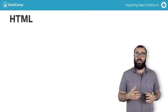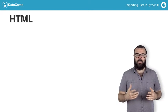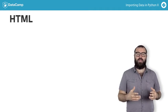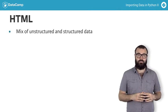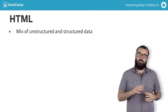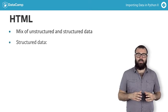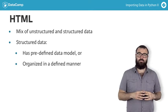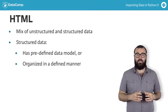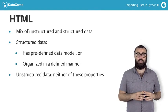You've got the HTML of your page of interest, but generally HTML is a jumble mix of both unstructured and structured data. A few words on these terms: structured data is data that has a predefined data model, or that is organized in a defined manner. Unstructured data is data that does not possess either of these properties.